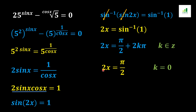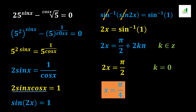In the next step, the 2 moves to the other side of the equation in division, and we get x equals π/4. So the value of x is π/4 when we use k equal to 0 for this expression. This is the value of x after simplifying the expression.